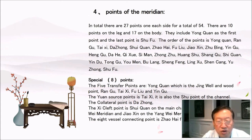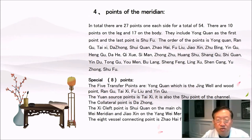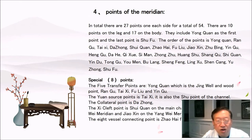Special points: there are 8 special points. The 5 transfer points are yong chuan, which is the jing well and wood point, followed by ran gu, tai xi, fu liu, and yin gu. The yuan source point is tai xi, also the shu point of the channel. The collateral point is da zhong. The xi cleft point is shui chuan on the main channel, zhu bing on the yin way meridian, and jiao xin on the yang way meridian. The 8 vessel connective point is zhao hai for the yin chiao.